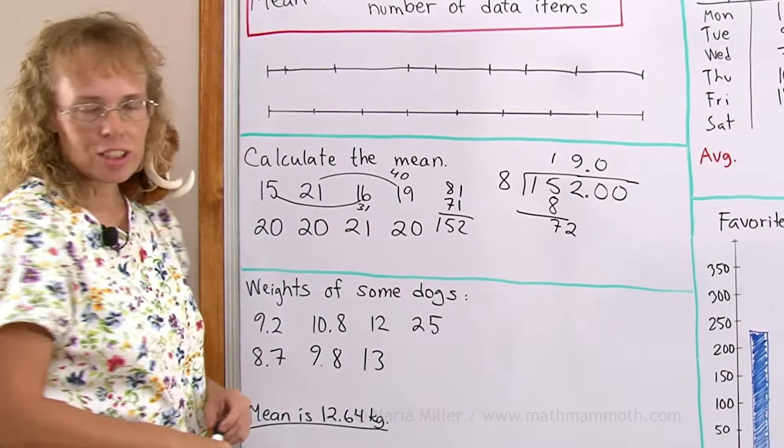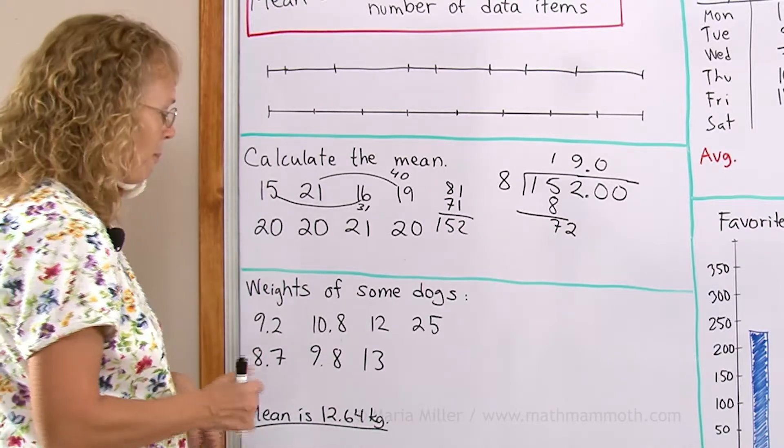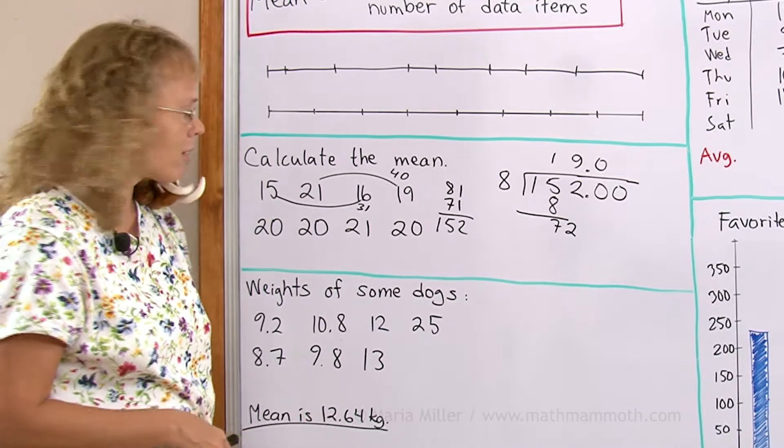Here are weights of some dogs in kilograms. Maybe it's in a kennel. They have a batch of dogs or something. And I calculated the mean. It's 12.64 kilograms.